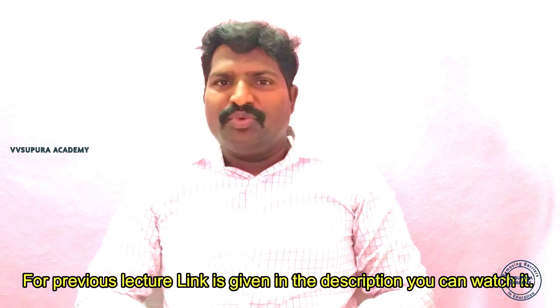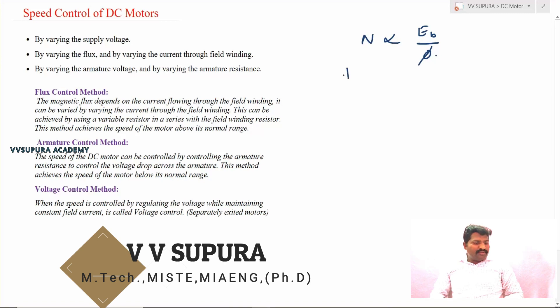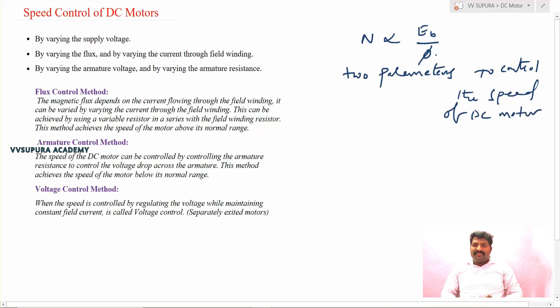In this class, let's discuss the speed control methods of a DC motor. As discussed in previous classes, the speed of a DC motor depends on back EMF and field flux. We can write the speed equation as n is directly proportional to Eb/φ. From this equation, there are two parameters to control the speed: back EMF and flux.